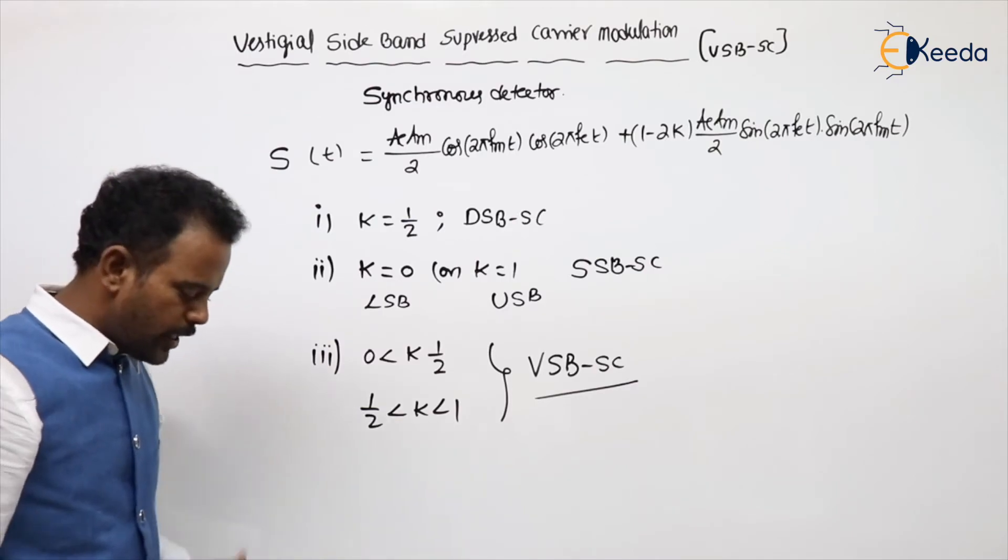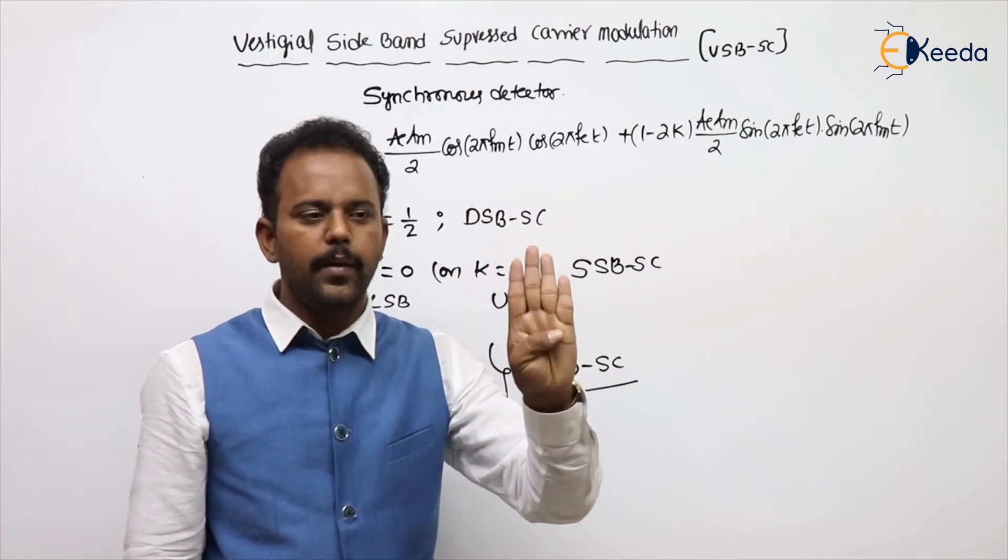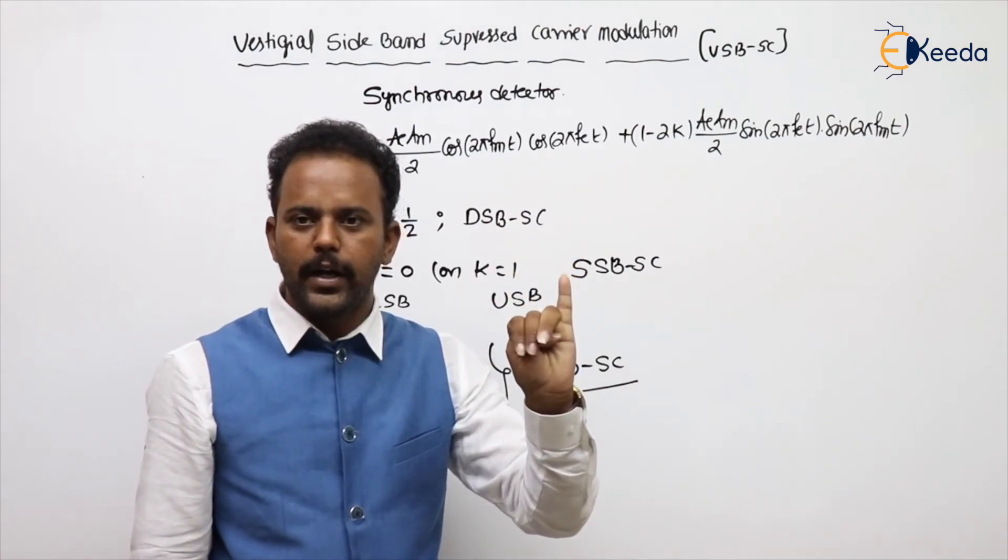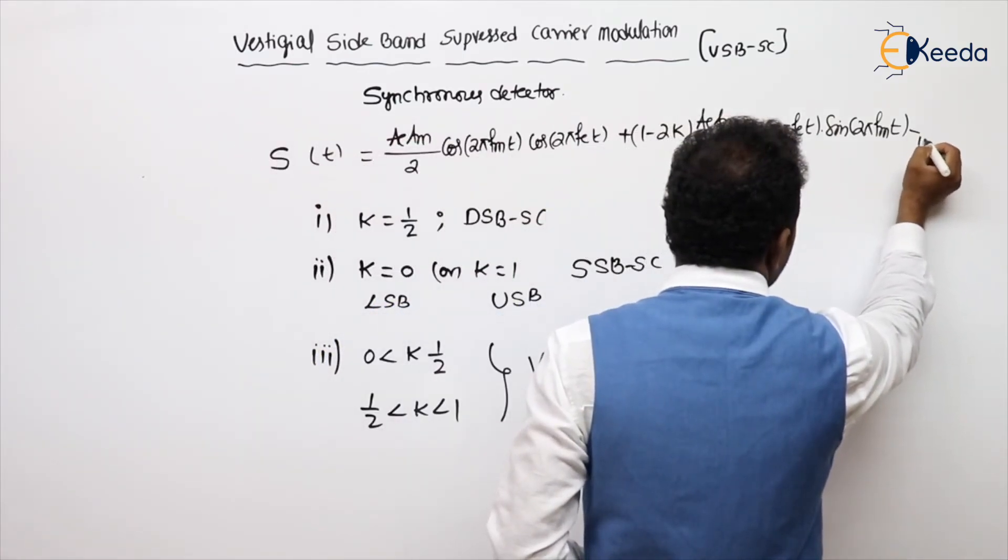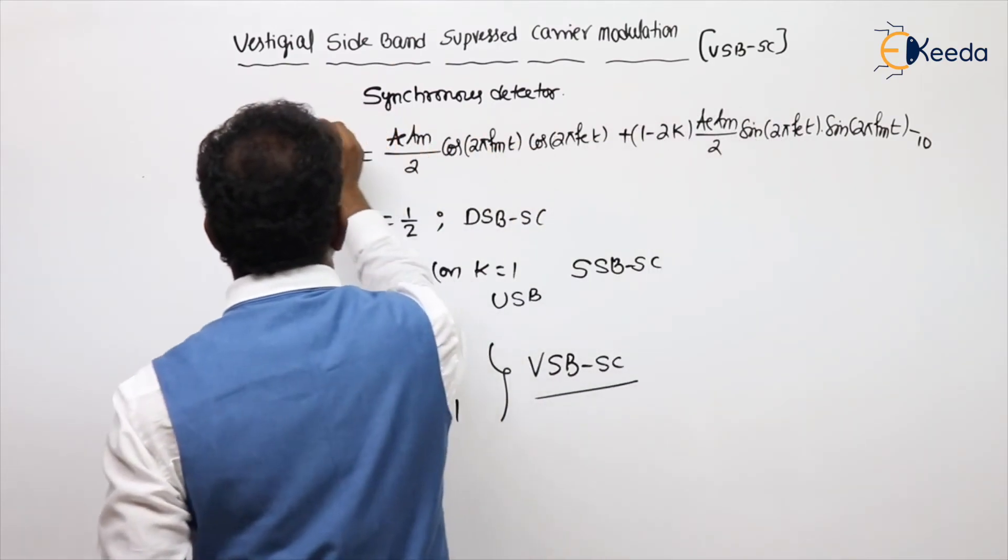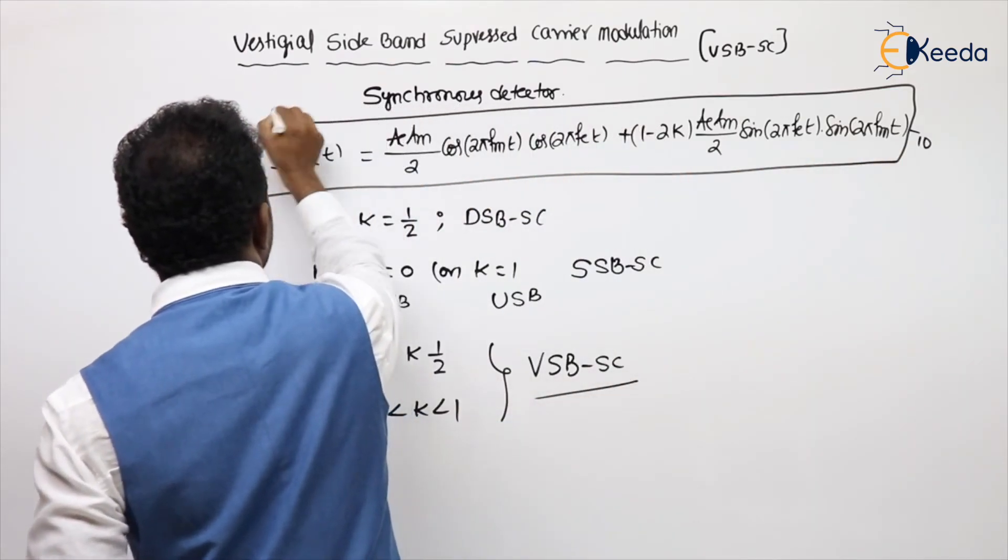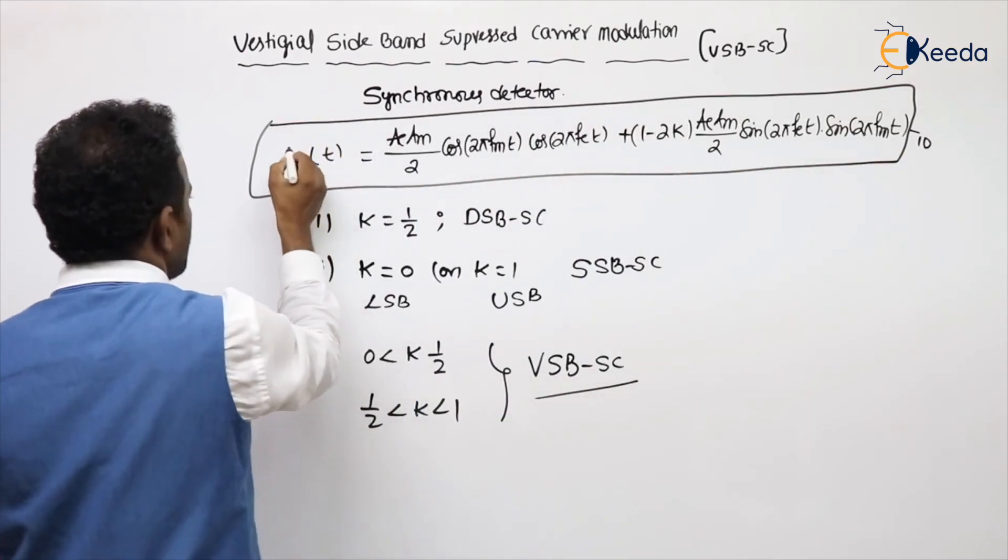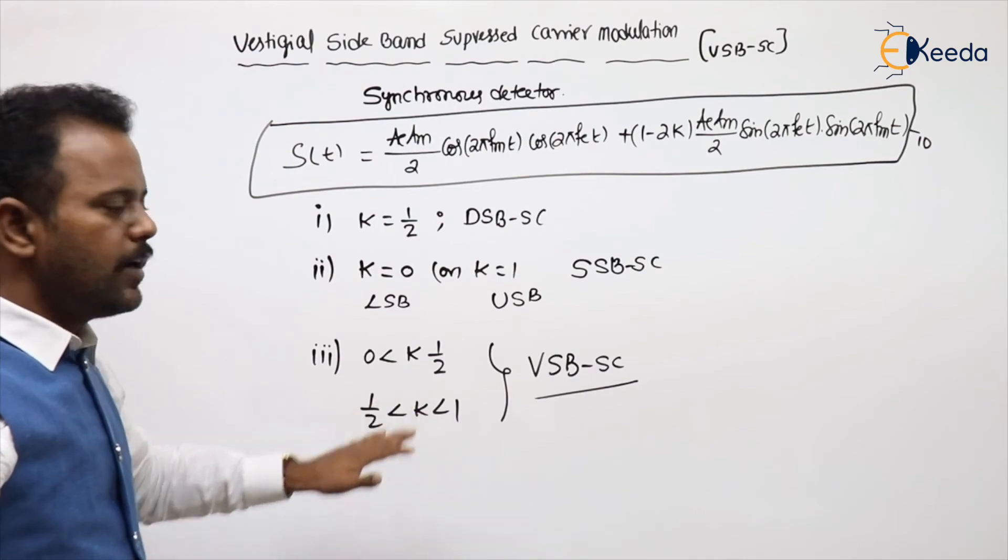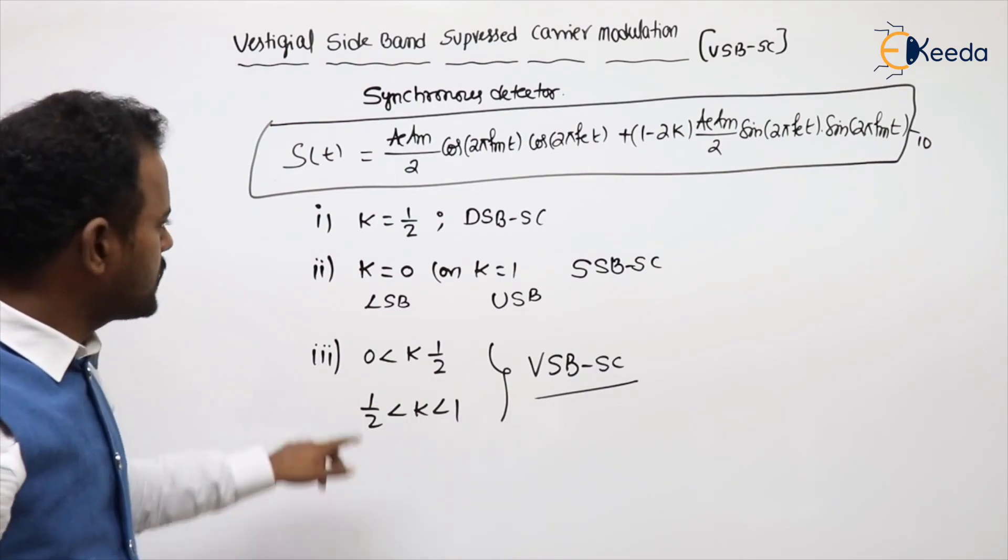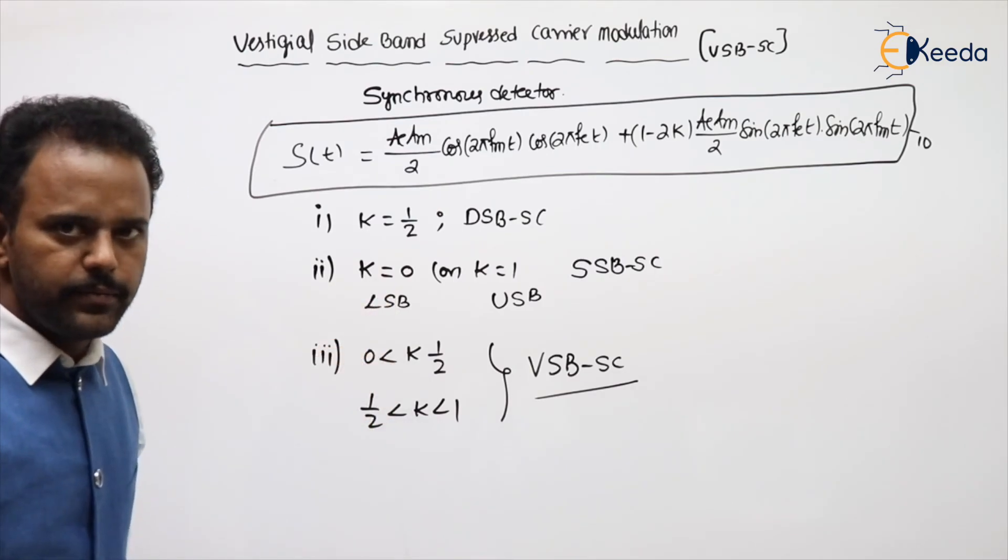Total, how many expressions we discussed up to now, the modulated equations? 4 in the AM, 3 in the DSBSC, another 3 in the SSBSC—that's at least 10 modulated expressions. In that list, this is also there. So it is given here: general expression which is suitable for all the sideband modulation schemes, by taking the different values of that factor k. Clear?